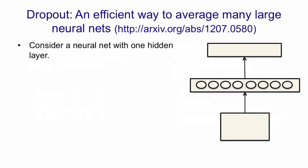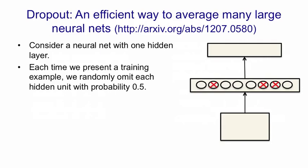Now I want to describe an efficient way to average a large number of neural nets that gives us an alternative to doing the correct Bayesian thing. The alternative probably doesn't work quite as well as doing the correct Bayesian thing, but it's much more practical. So consider the neural net with one hidden layer shown on the right. Each time we present a training example to it, we're going to randomly omit each hidden unit with a probability of 0.5. So we crossed out three of the hidden units here. And we run the example through the net with those hidden units absent.